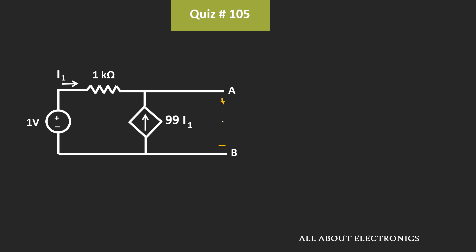Let's say this voltage is equal to Vth. And the same voltage will also appear across these two terminals. That means the voltage at this node is also equal to Vth. So now, to find this voltage Vth, let's apply the KCL equation at this node.